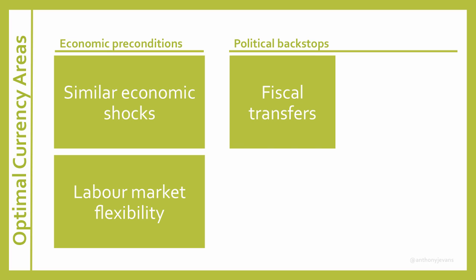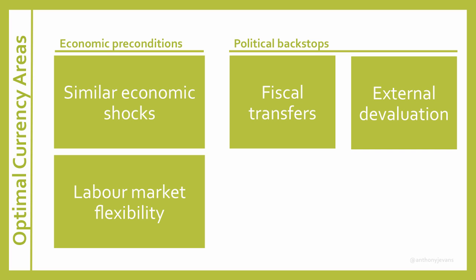If you don't have an optimal currency area, fiscal transfers may be one mechanism. Another is external devaluation. This is when one region would leave the currency union and restore or adopt their own currency. By reducing the value of their currency, this can increase exports and generate some growth.